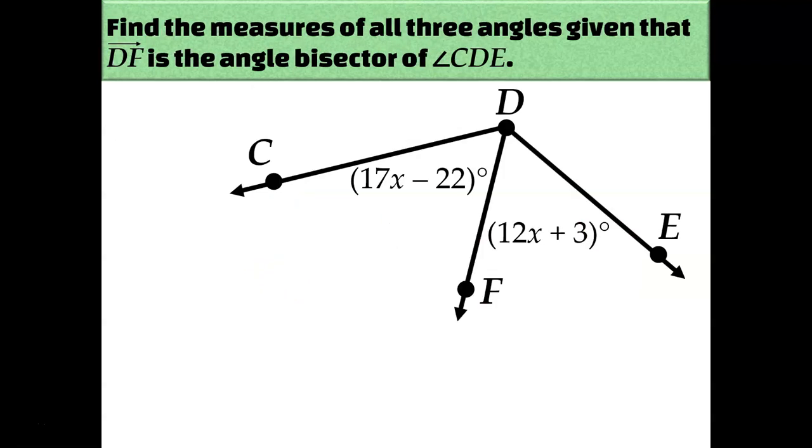Our next example is basically the same thing except with algebraic expressions instead of just numbers. So since I know that DF is the angle bisector of CDE, DF cuts CDE in half. That means that these two algebraic expressions must be the same thing. So that means I can set them equal to each other. So I've got 17x minus 22 equals 12x plus 3 because these two angles created by this angle bisector have to be the same measure. So now we'll just solve. Subtract 12x from both sides, add 22, and divide by 5.